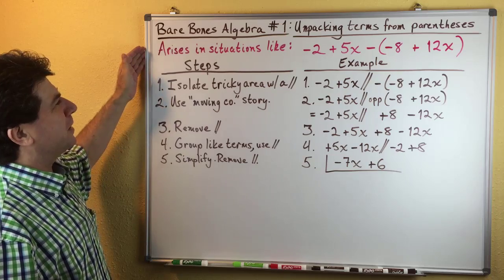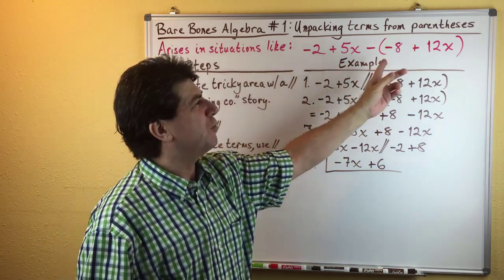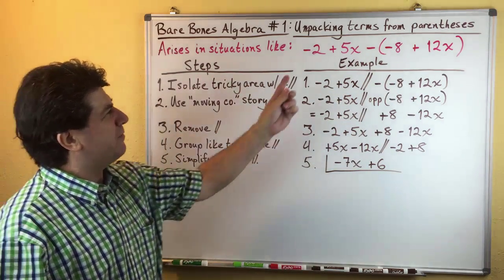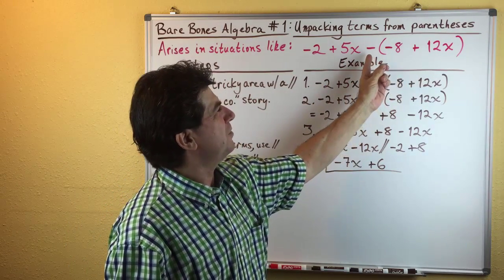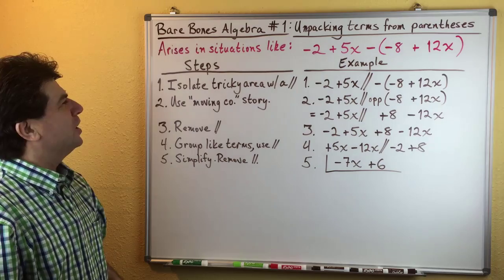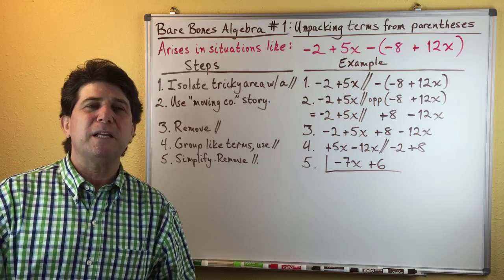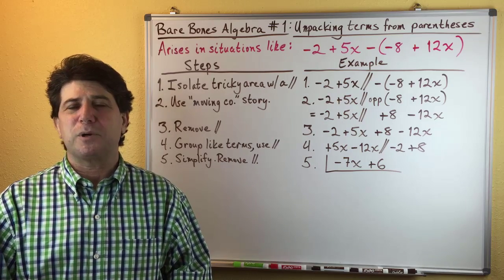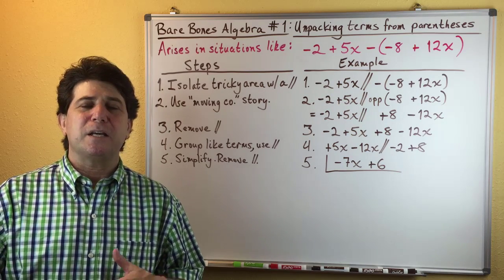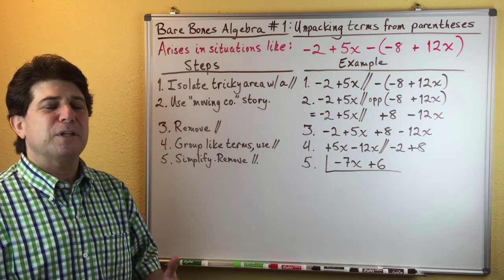The first situation we're going to look at involves an expression like negative 2 plus 5x minus the quantity of negative 8 plus 12x. The question basically involves the negative sign in front of the quantity in parentheses and how you unpack those terms. In the second segment of this video I'll explain a little story I call the moving company story — as in a company that helps you move your possessions from one household to another.